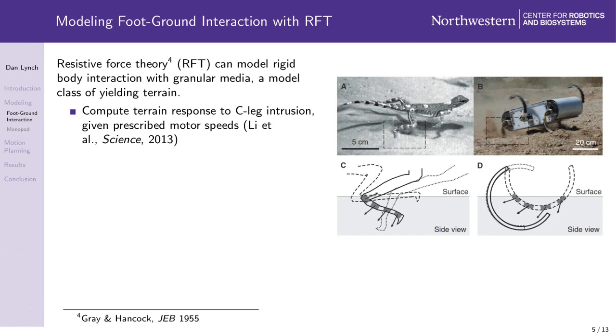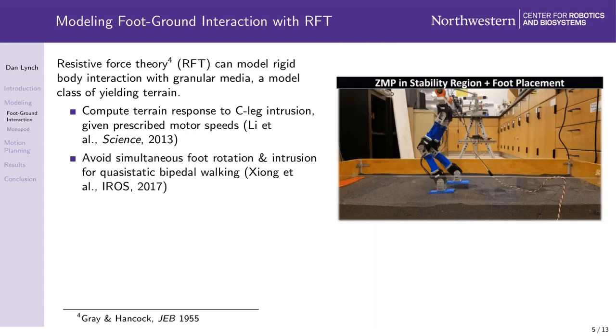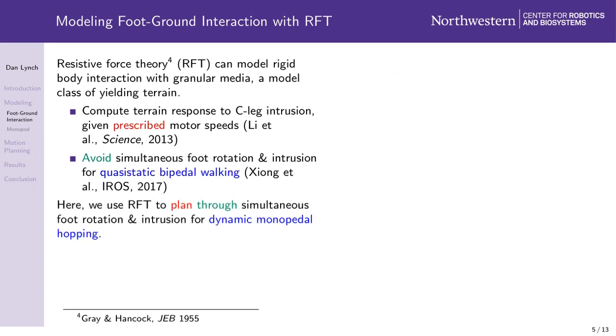One recent example is from Li et al, who used RFT to predict the ground reaction forces arising from prescribed motor speeds applied to a small hexapod with C-shaped legs. Another example is from Xiong et al, who used RFT to avoid simultaneous foot rotation and intrusion for bipeds walking quasi-statically on granular media. Our work builds on these examples by using RFT to help plan through simultaneous foot rotation and intrusion in order to achieve hopping gaits.